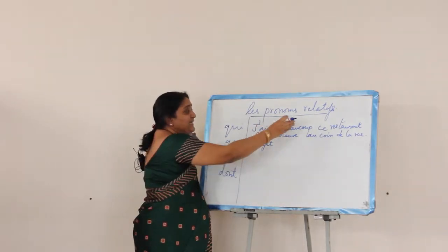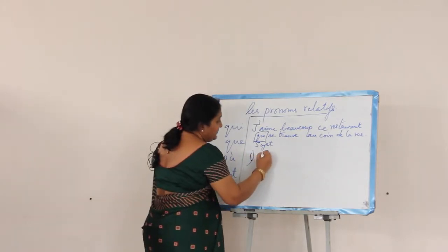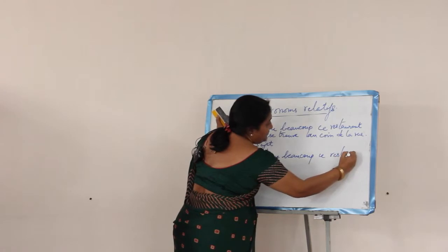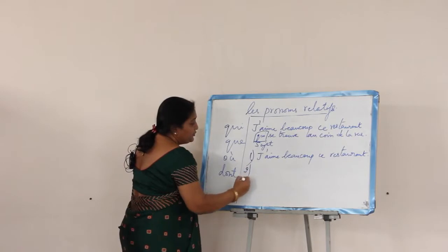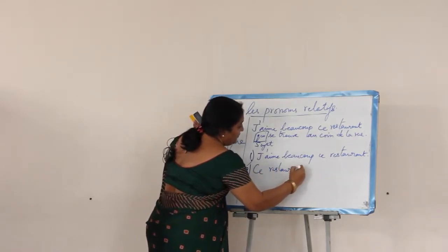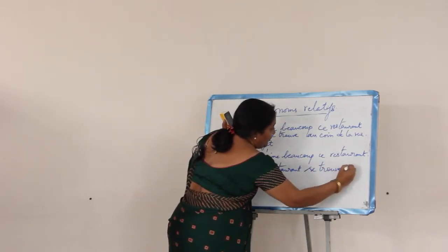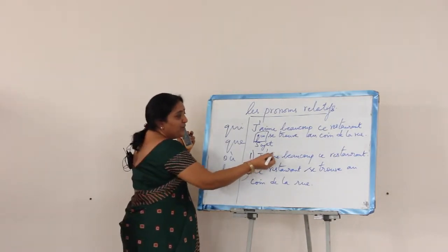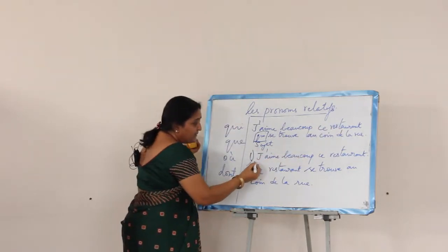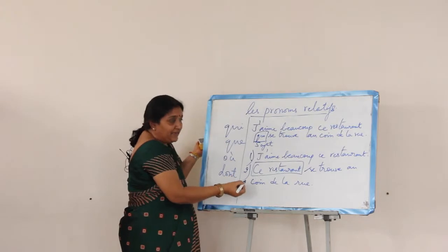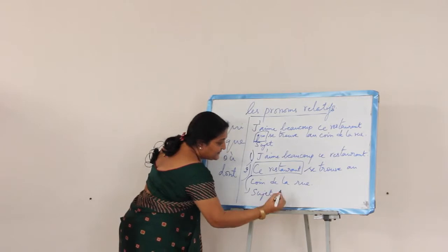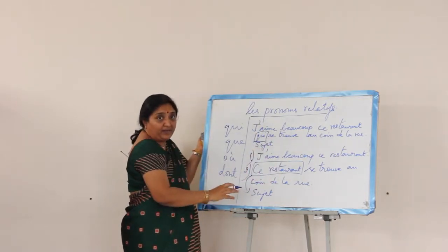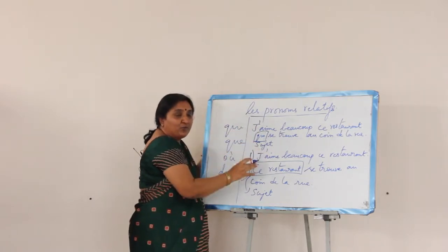Now let us see how this word has linked two sentences. The first sentence is: j'aime beaucoup ce restaurant. The second sentence contains ce restaurant again in the subject's place, and that is getting replaced with qui. These two sentences are joined and the repetition is avoided. So we have the pronom relatif for sujet, which is qui.